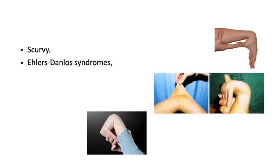Scurvy is a deficiency of Vitamin C and causes defective collagen formation. The patient has loose teeth and skin hemorrhages. There are many inherited diseases caused by mutations in genes coding for type 1 and type 3 collagen. Ehlers-Danlos syndrome is characterized by abnormal skin laxity and hypermobility of the joints; this is a type 5 collagen disorder.